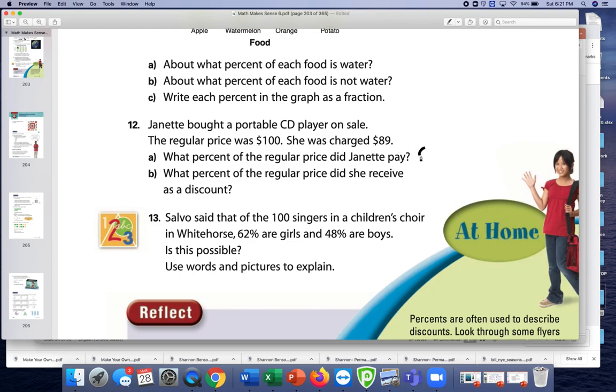And then what percent of regular price did she receive as a discount? So that means how much did she save? Well, we would just do 100 minus 89, which should be 11%.